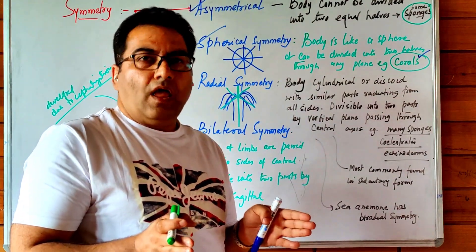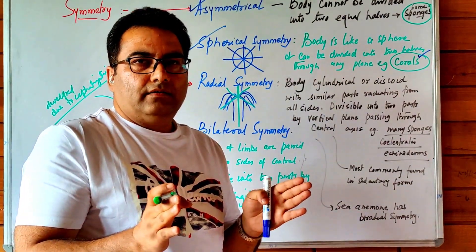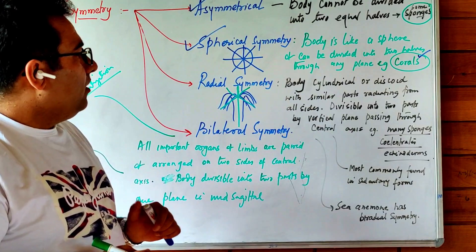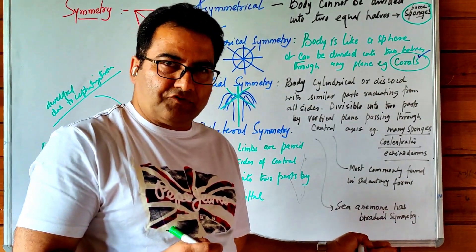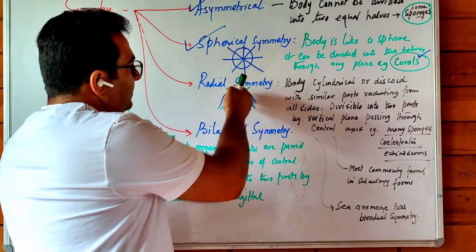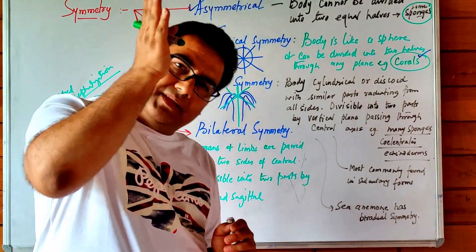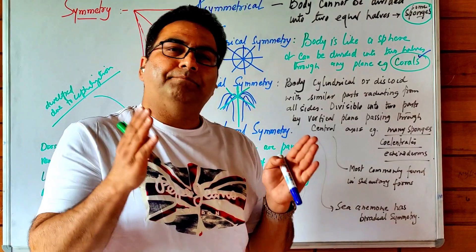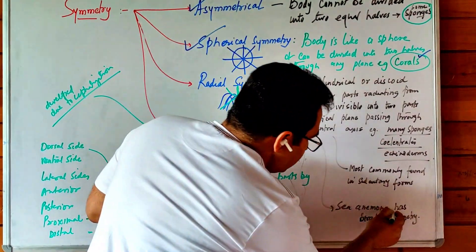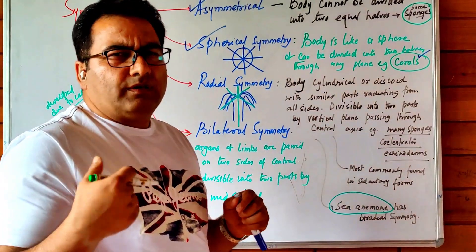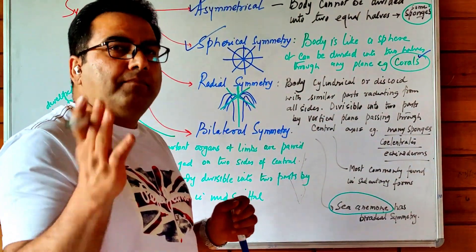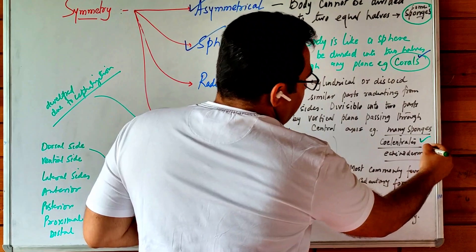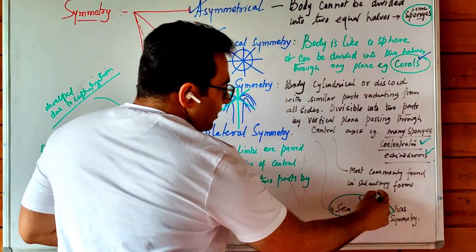A related type, biradial symmetry, is found in sea anemones, where the organism can be divided into two equal parts from any side. Radial symmetry is found in cnidarians and echinoderms, while biradial symmetry is found in sea anemones.